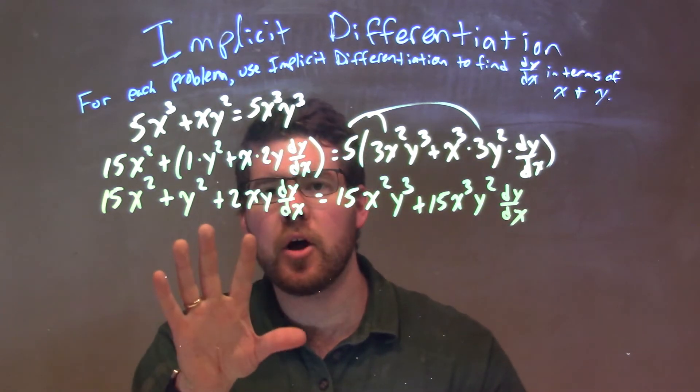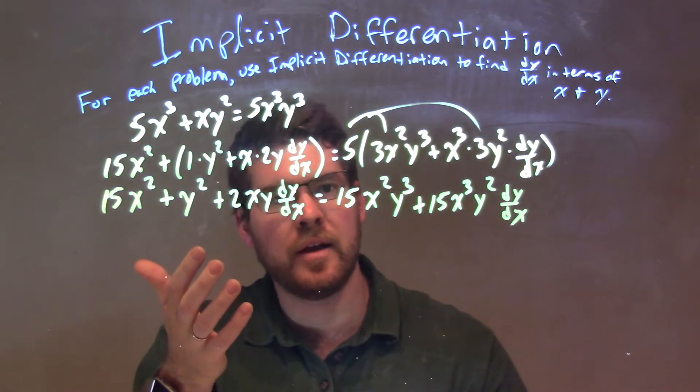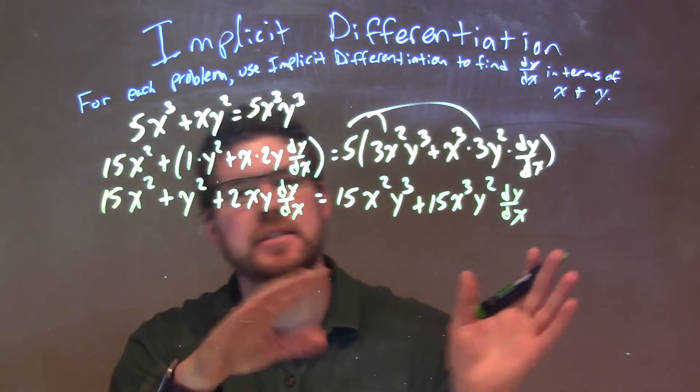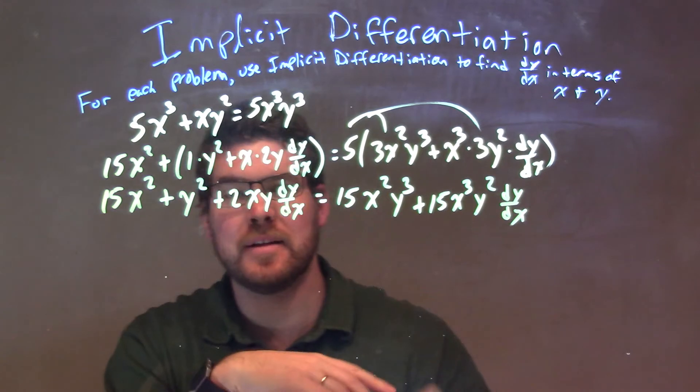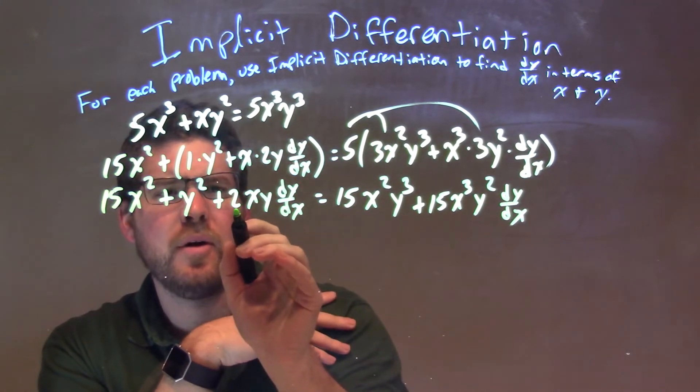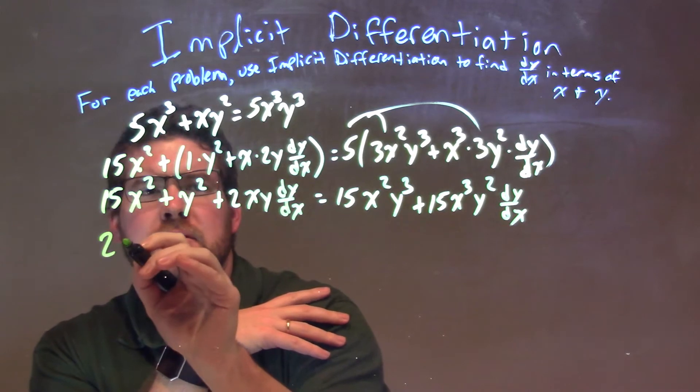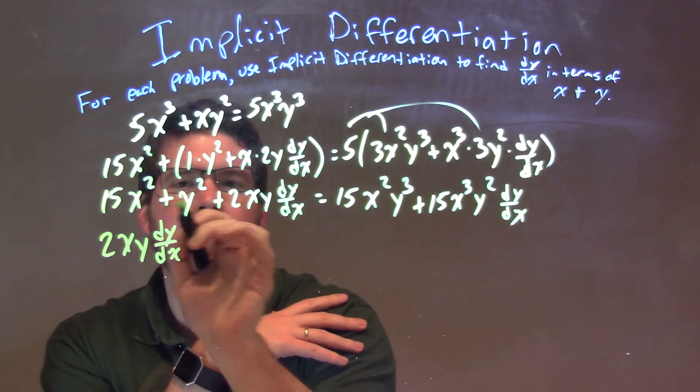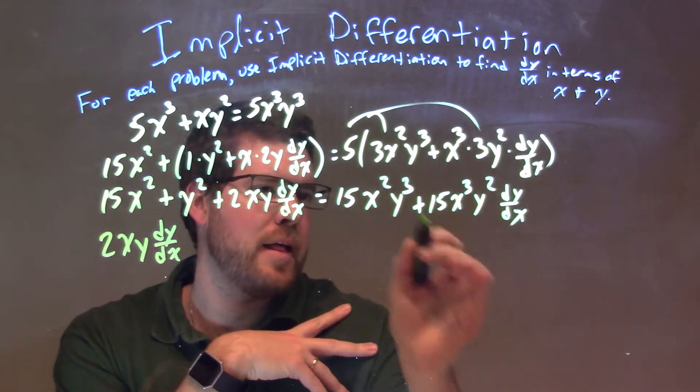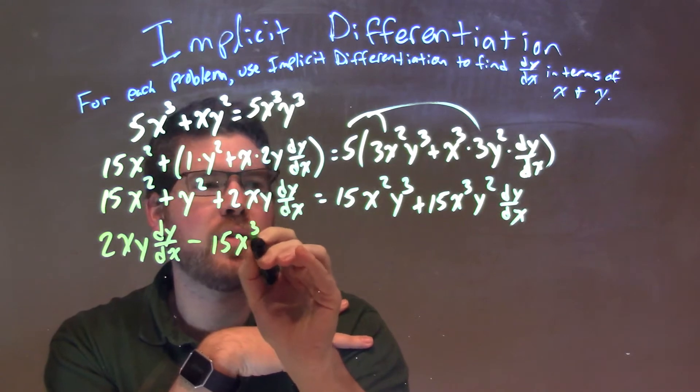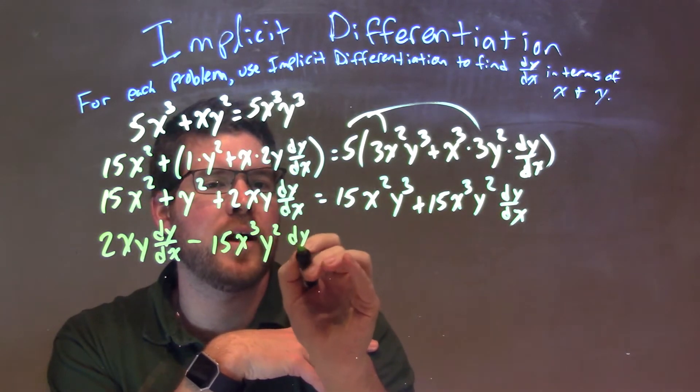So, what I'm going to do is I'm going to bring all my dy/dx's to one side and all my other stuff to the other side. So, let's go put dy/dx's to the left, everything else that's not attached to dy/dx to the right. So, doing so, I'm going to put 2xy up front here, 2xy dy/dx, knowing that I'm going to subtract these two parts right there. Then, I'm going to subtract this right here minus 15x to the third y squared dy/dx.